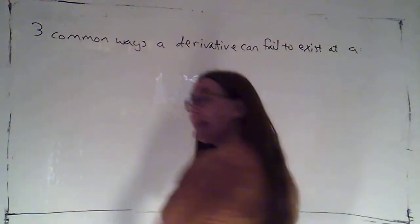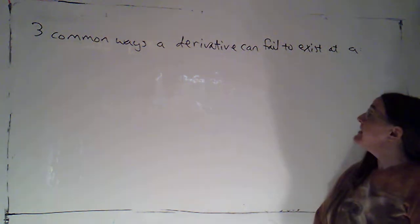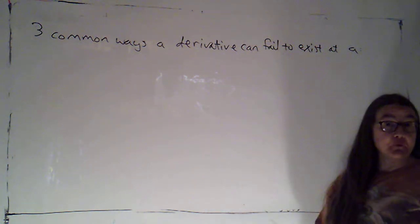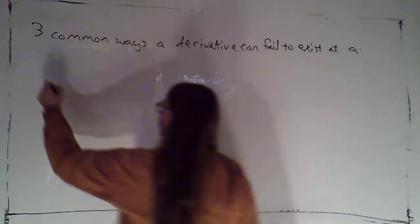In this video we're going to be taking a look at some common ways that a derivative can fail to exist. And there are three common ways we're going to take a look at.